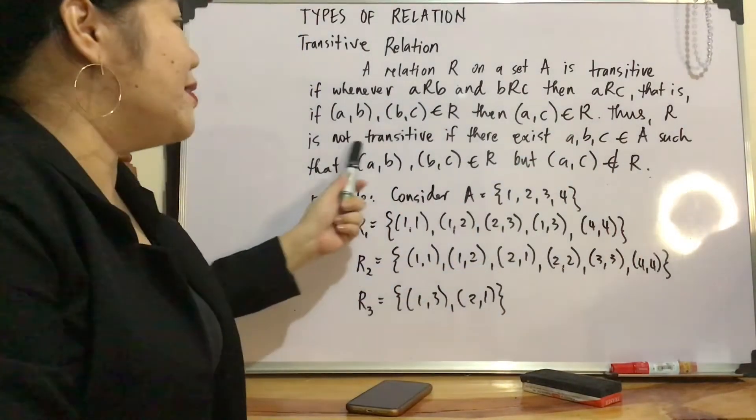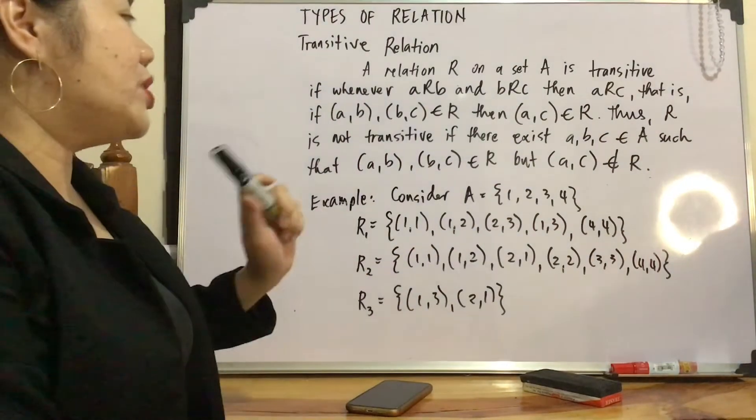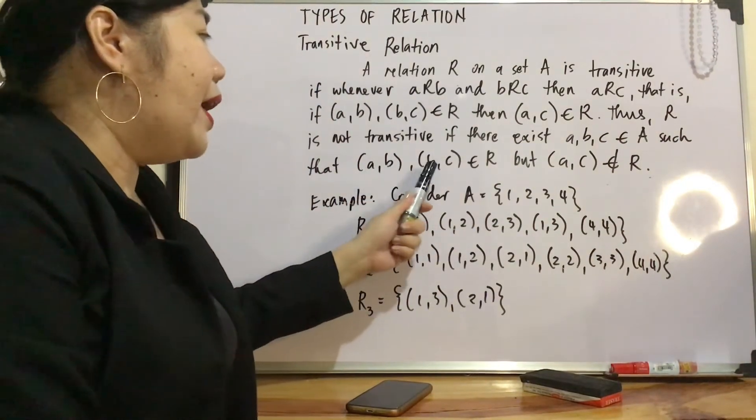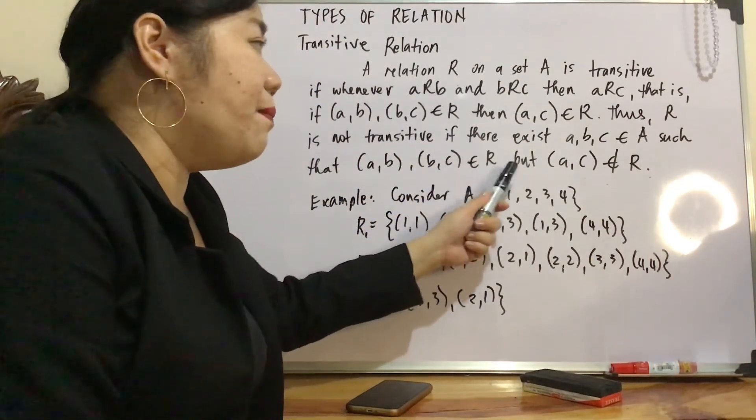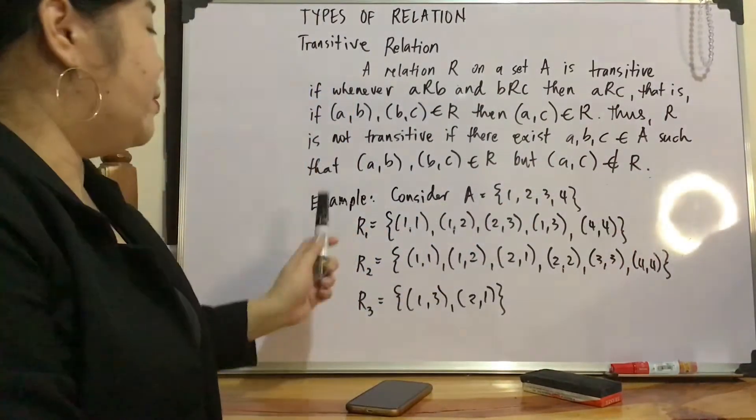Thus, R is not transitive if there exists a, b, c element of A such that (a,b) and (b,c) are elements of R but (a,c) is not an element of R. Okay, so let's illustrate that.